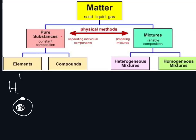A compound contains two or more different types of elements. For example, water — water contains two hydrogen atoms and one oxygen atom. So it contains two elements. These are bonded together properly.